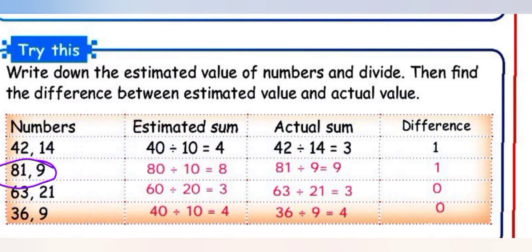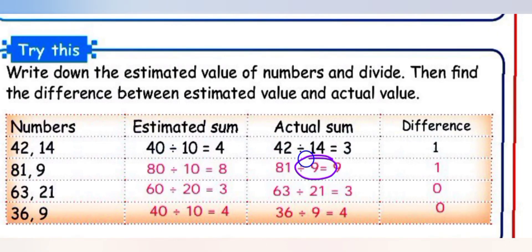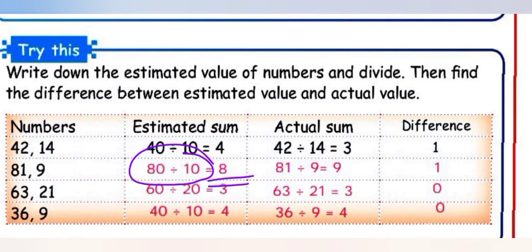Next: 81 ÷ 9. Actual answer is 9. Estimated: 81 — ones place 1 is below 5, so 8 tens stays 80. 9 — ones place 9 is greater than 5, round up to 10. Estimated: 80 ÷ 10 = 8. Difference: 9 minus 8 equals 1.